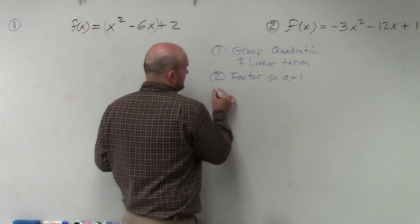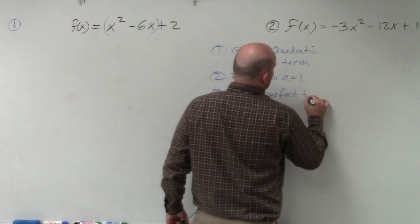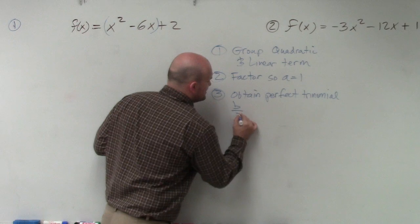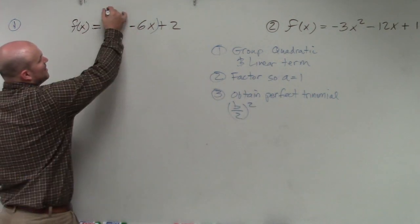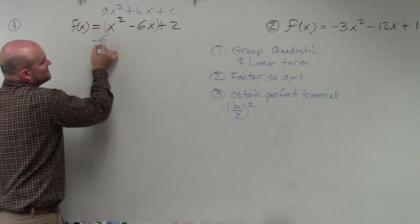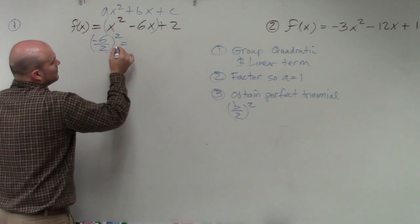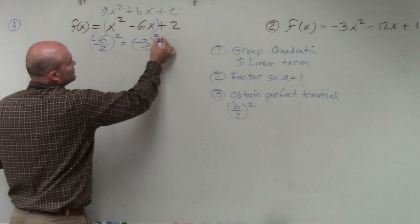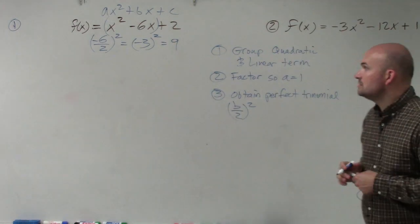Step number three, obtain your perfect square trinomial. Well, how do you obtain a perfect square trinomial? What you do is you do b divided by 2 squared. So your b, remember this is ax squared plus bx plus c, b is negative 6. So I take negative 6 divided by 2 squared. So negative 6 divided by 2 is negative 3 squared equals 9. Does everybody follow me so far?